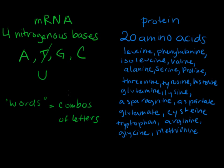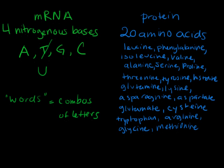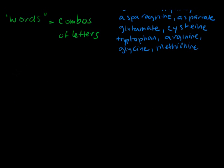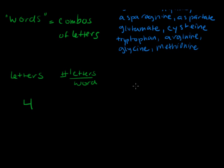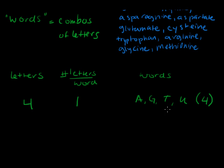We need at least 20 words out of our four-letter alphabet of four nitrogenous bases. What's the minimum number of letters we need per word? If we have four letters in our alphabet and only one letter per word, we can make A, G, T, and U — only four words total. That's not 20, so one letter per word is too few.